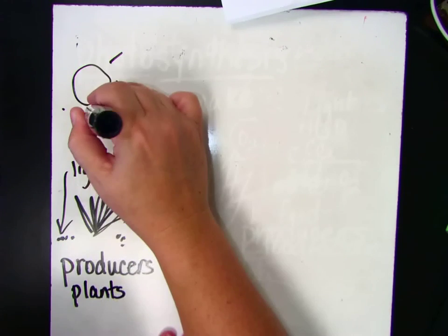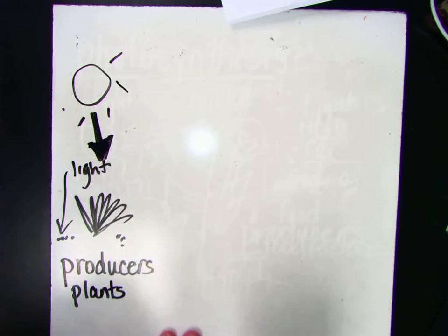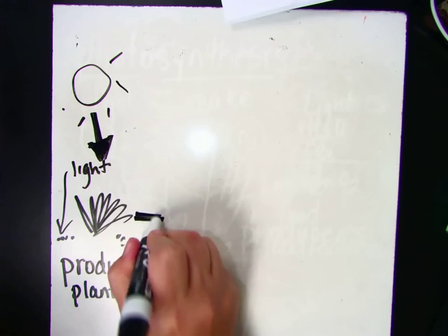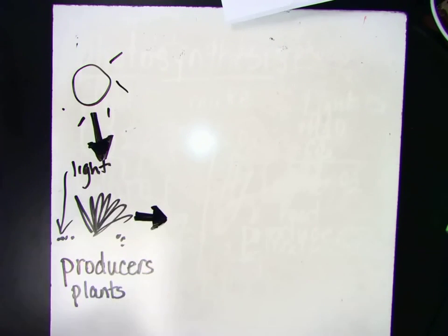And so we've got a transfer of energy going on right here, from the sun to the plant. And then along comes an animal and eats the plant, so energy is transferred from the plant to the animal.